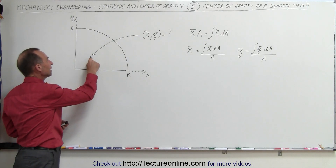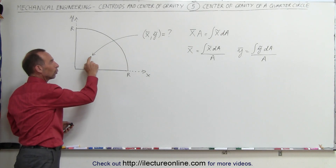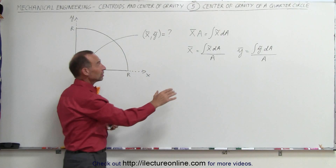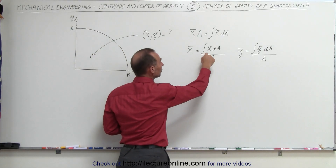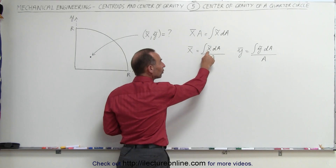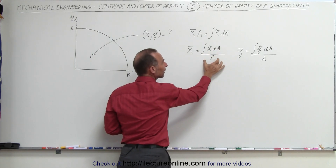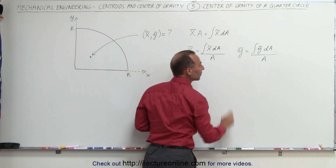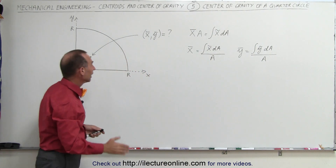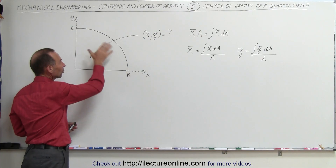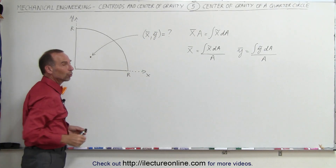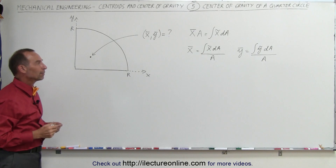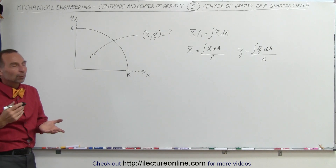How do we find the center of gravity of the quarter circle, or the x and y coordinates of that center of gravity? We have the equation where the x-coordinate is equal to the integral of the x-coordinate of each little piece divided by the total area, and we integrate the numerator. We can also find the same thing with the y-coordinate. Because of the shape of this quarter circle, the value for the x-coordinate and the value for the y-coordinate will be exactly the same, so we only have to do one and then we know it for both.